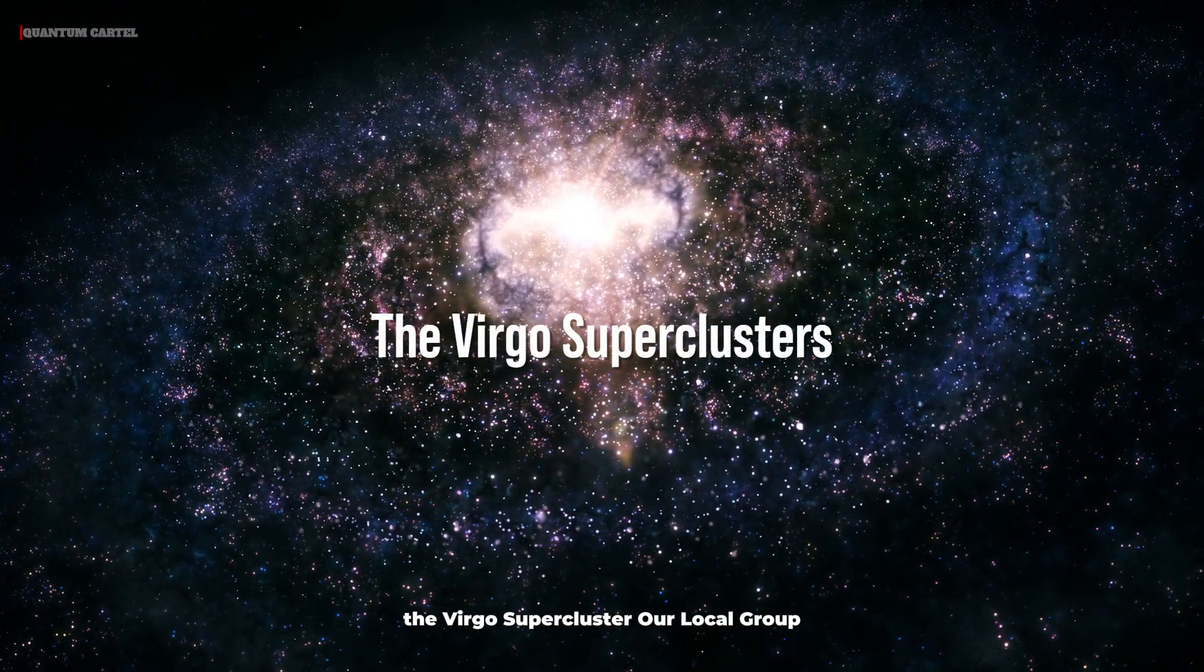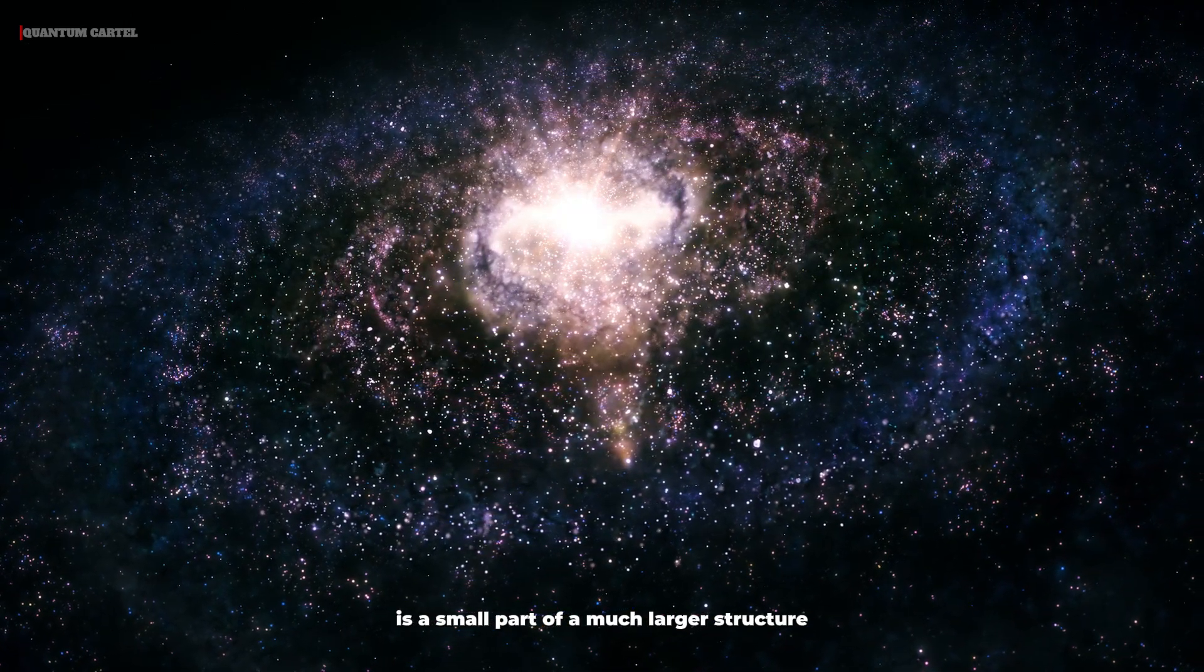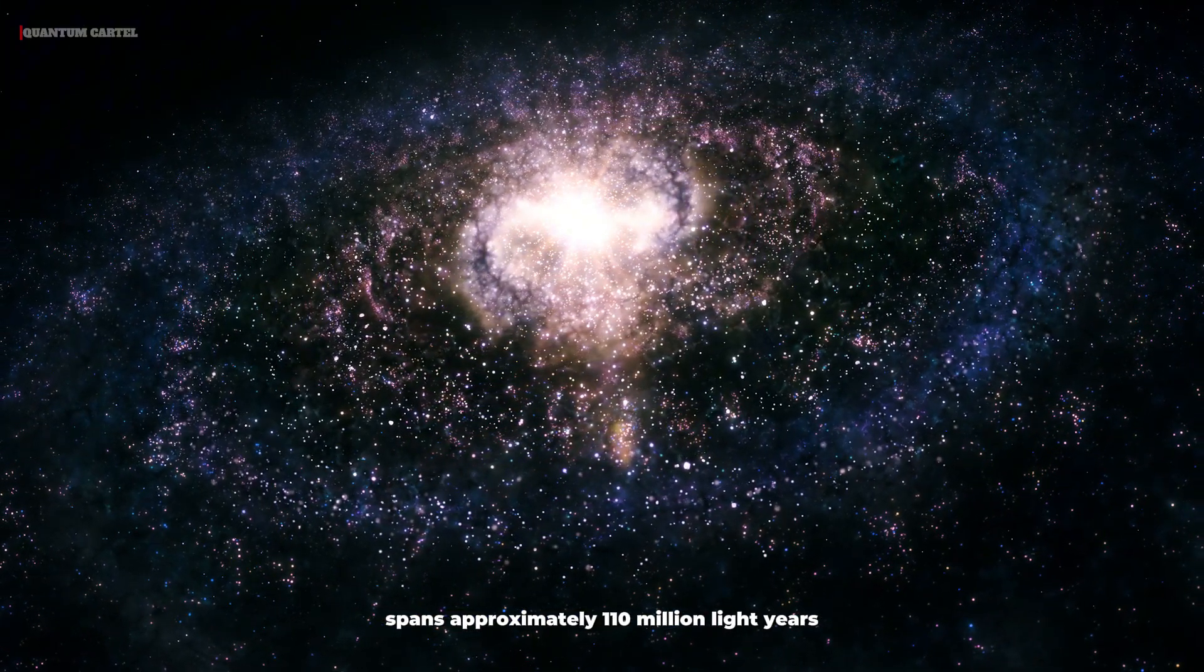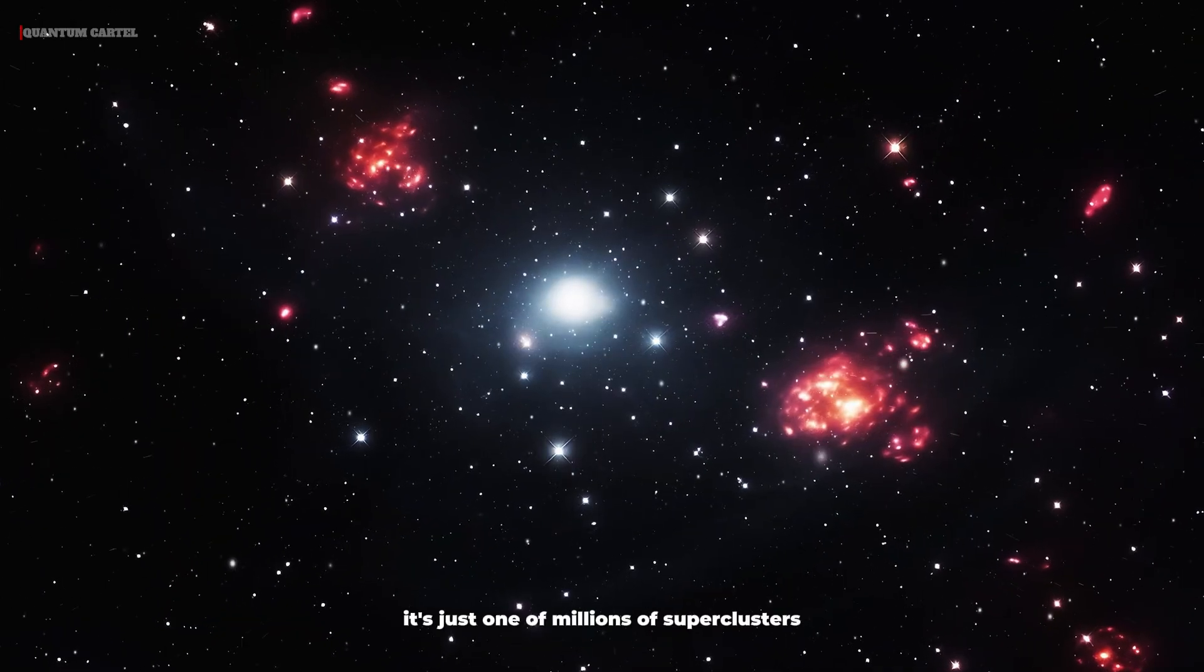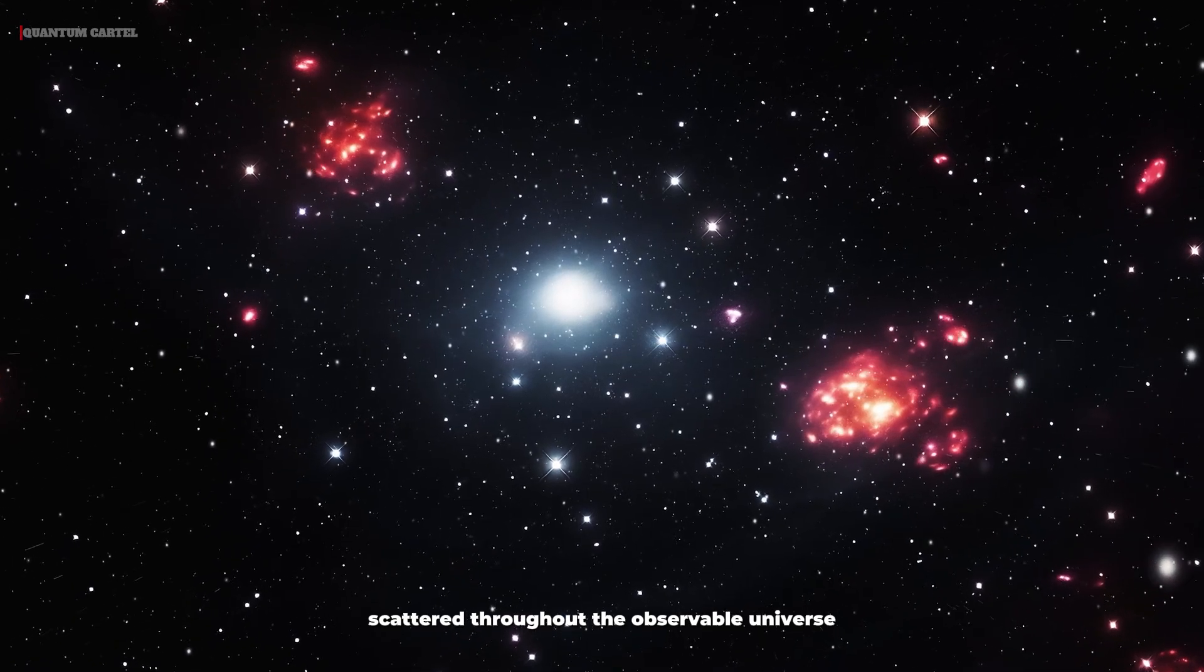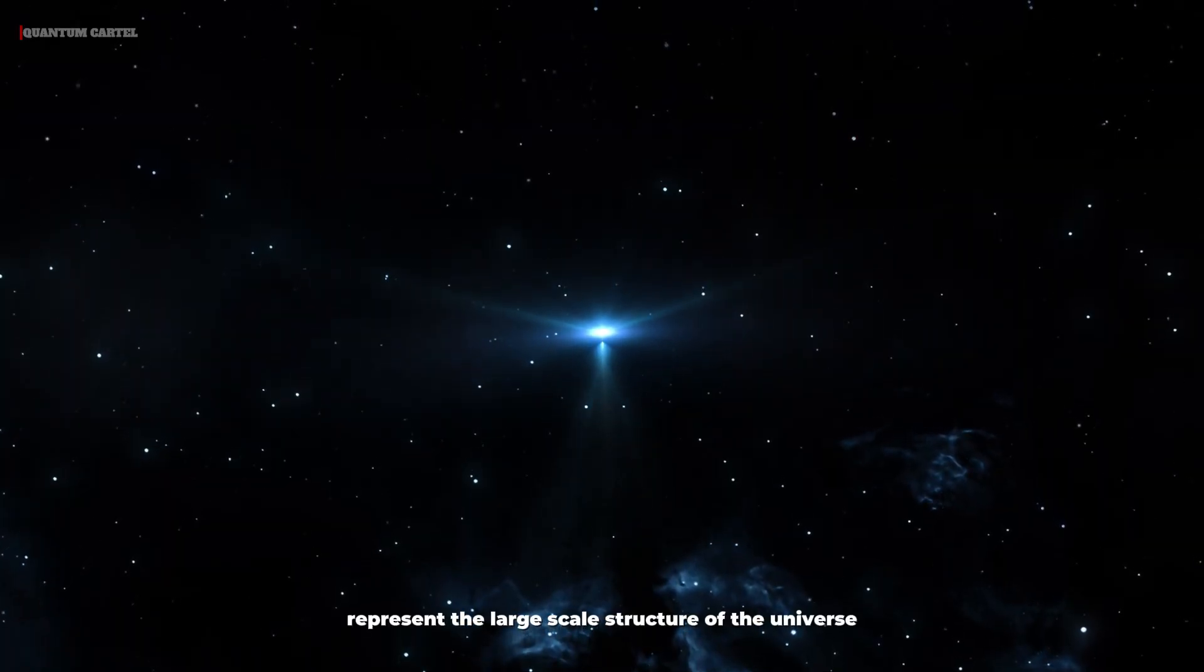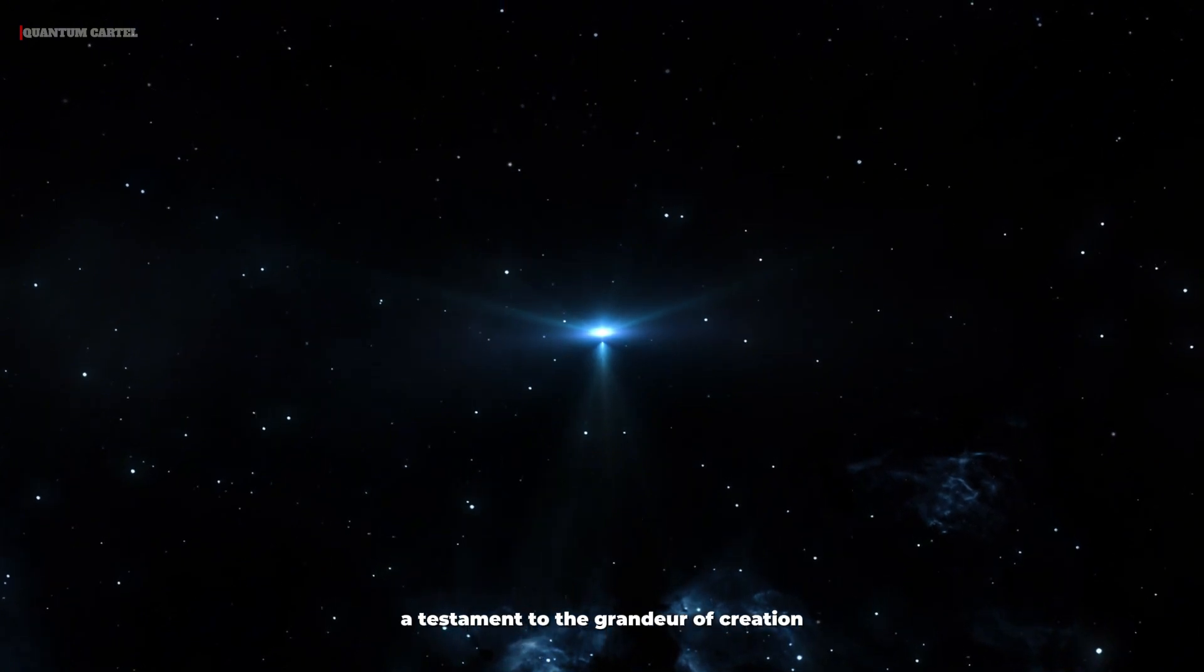Beyond the Local Group, the Virgo Supercluster. Our Local Group is a small part of a much larger structure, the Virgo Supercluster. This supercluster spans approximately 110 million light-years and contains thousands of galaxies. It's just one of millions of superclusters scattered throughout the observable universe, connected by a vast cosmic web of filaments and voids. These superclusters represent the large-scale structure of the universe, a testament to the grandeur of creation.